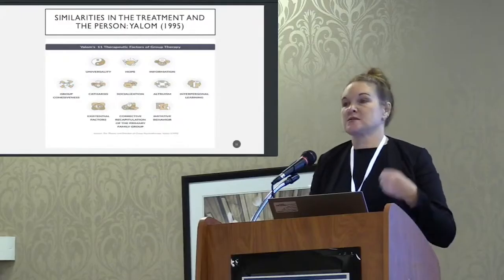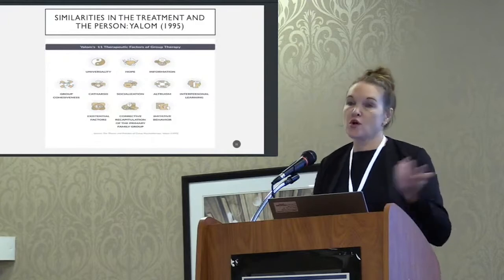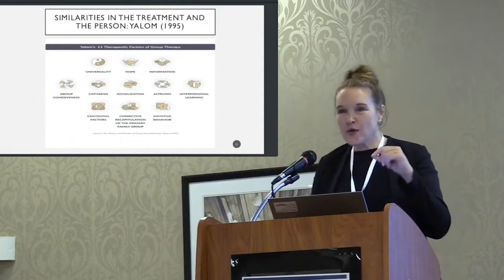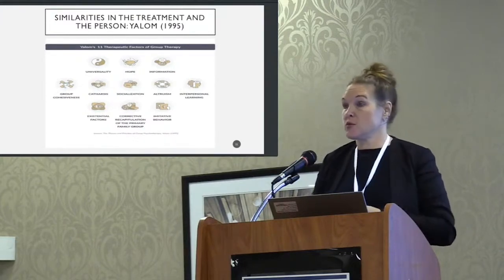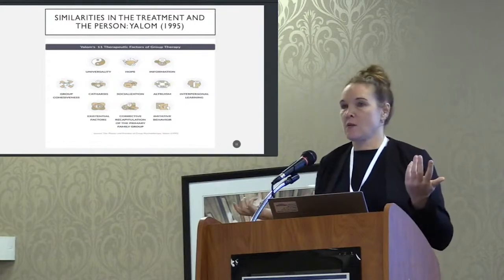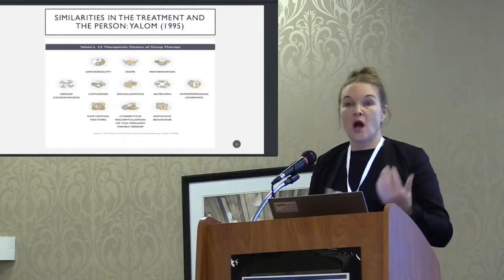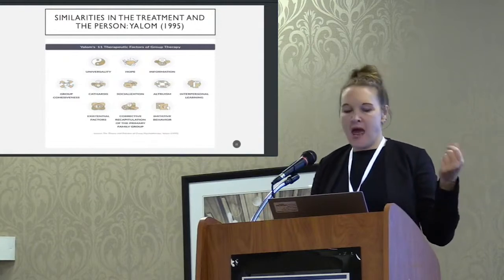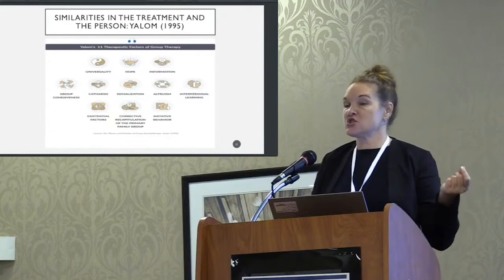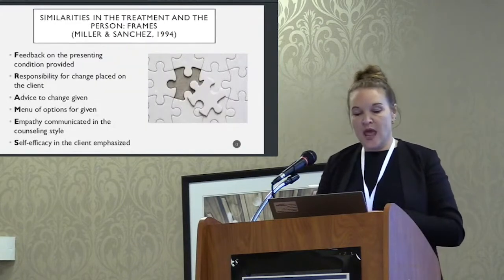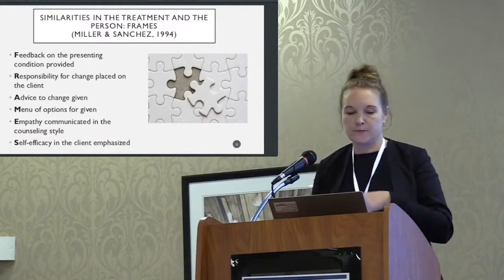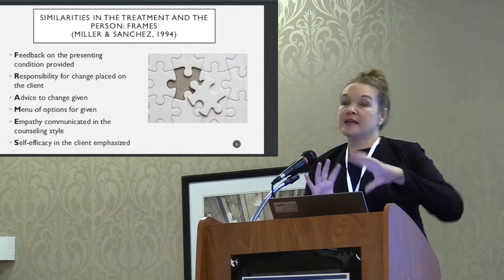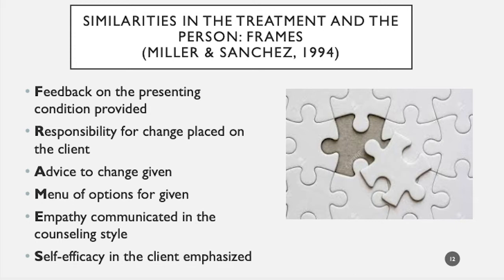The next model shows similarities in treatment plus one cross-cutting process within the person. At this point you should start seeing repetition — particular constructs that keep coming up. We see the therapeutic relationship again, identified here as an empathic counseling style. We also see provision of information, described as feedback on the presenting condition plus advice to change combined with a menu of options. And we see self-efficacy — that specific belief in one's capacity to change a behavior. This model was originally designed to identify commonalities across brief interventions for substance use disorders.